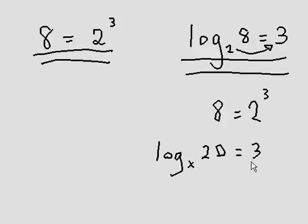The log kicks the x to the other side, runs away. The x lifts the 3. So 20 is equal to x to the power of 3.